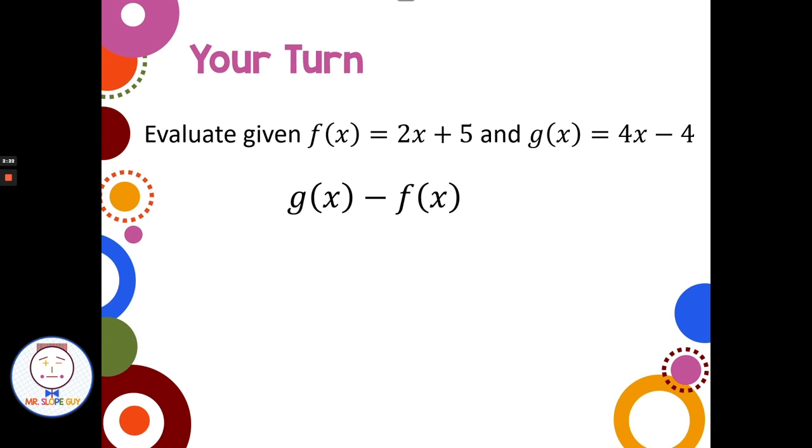All right, welcome back. So g(x) was our 4x minus 4, minus our f(x) was 2x plus 5.